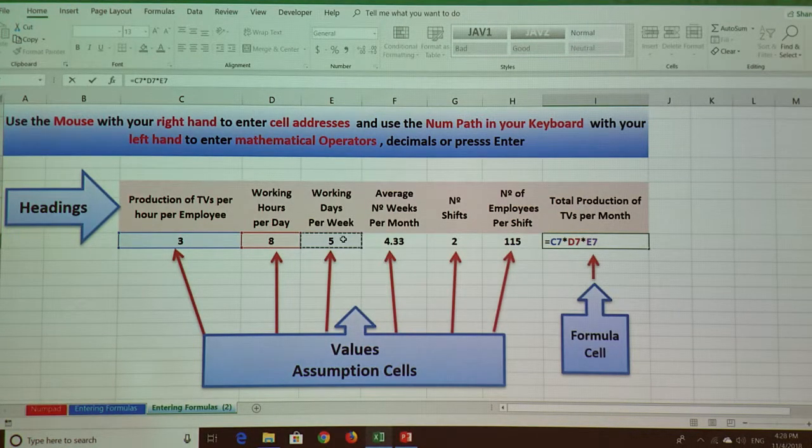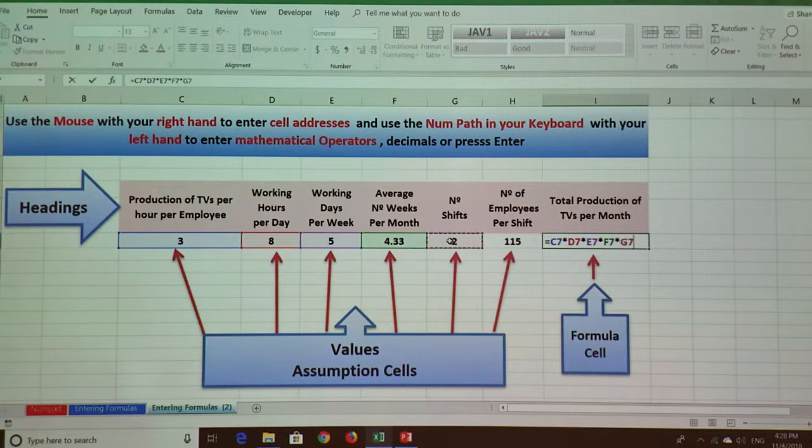We click the next value, enter multiplication, click the next value, enter multiplication again, and continue this pattern until we click the last value.